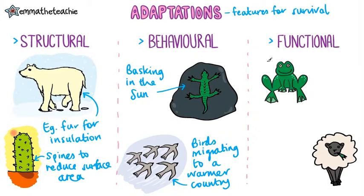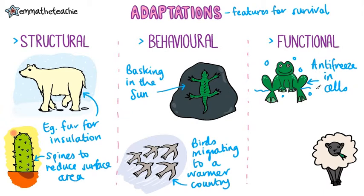Functional adaptations are about how something works or functions. For example, some fish and frogs living in very cold environments have antifreeze in their cells so that they don't freeze to death. And some animals only give birth in a certain season to maximize their offspring's survival.